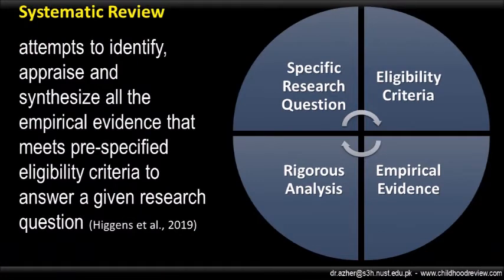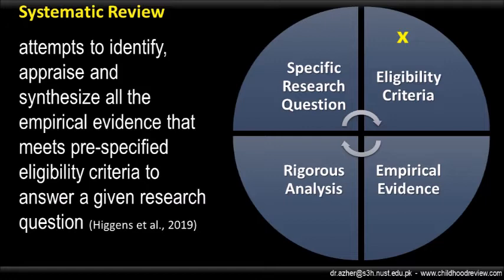Systematic review is defined as a type of literature review that attempts to identify, appraise, and synthesize all the empirical evidence that meets pre-specified eligibility criteria to answer a given research question. This definition points out four major features of systematic review. First, there must be a specific research question that will determine the direction of your investigation, meaning to seek an answer to your specific research question through reviewing literature. Second, pre-specified inclusion and exclusion criteria that will help you to search, identify, and screen the relevant literature. This criteria is often described in detail in the form of a searching or selection protocol.